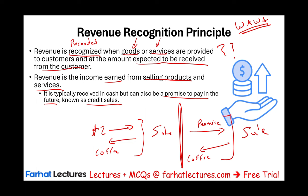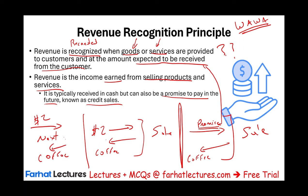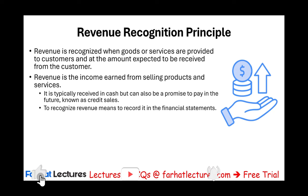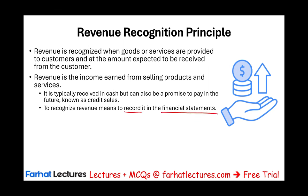The revenue recognition principle states that revenue is recognized when goods or services are provided. A promise to pay is as good as if you paid, because as long as you are expected to pay, and obviously if they don't trust you, they would not have sold it to you on credit. Now let's use a third example. Let's assume I walk into Wawa today, give them $2, and tell them I'll come back next week to get my coffee. Is this revenue? No, because Wawa did not deliver the goods. You only recognize revenue when you deliver the goods — not because money was exchanged. If they didn't deliver the goods, they cannot recognize the revenue. Recognize revenue means to record it in the financial statements — you record it when the company delivers the goods or service.